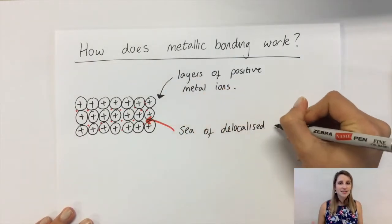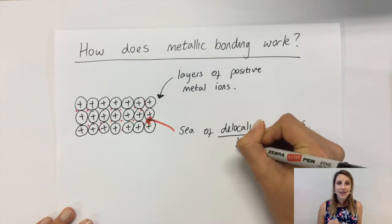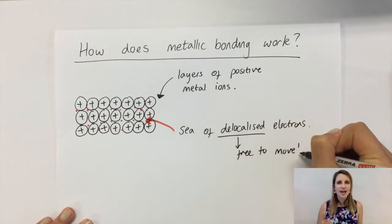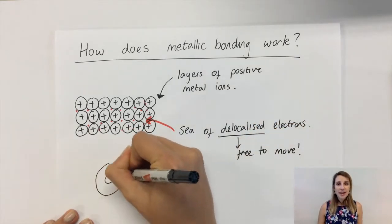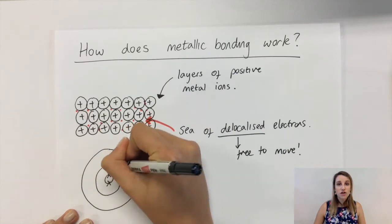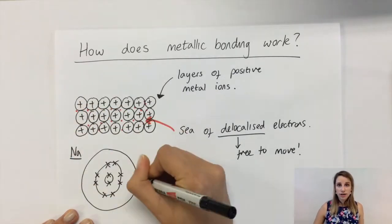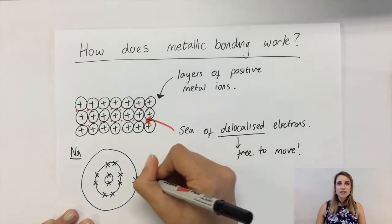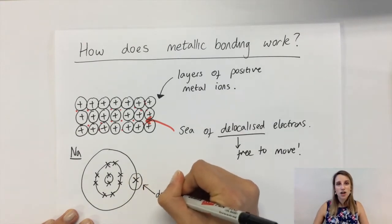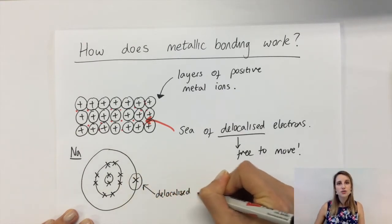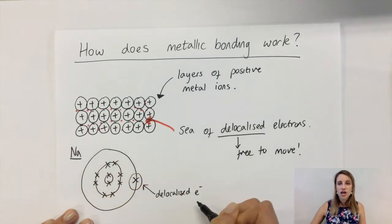When I'm talking about delocalized electrons, you might be thinking which electrons get delocalized. Here is my electronic configuration for sodium in its outer shell. In terms of which electrons get delocalized, it is just those outer shell electrons. So for sodium, only one electron gets delocalized, not all of them.